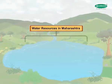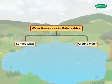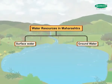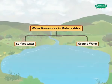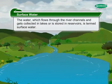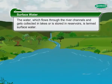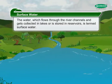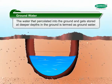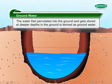Water resources in Maharashtra can be grouped in two categories: surface water and ground water. The water which flows through the river channels and gets collected in lakes or is stored in reservoirs is termed as surface water. The water that percolates into the ground and gets stored at deeper depths is termed as ground water.